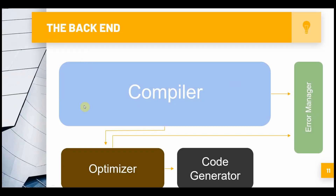Now let's look at the backend. Here's how I structured my backend: we have our compiler, our error management system, our optimizer, and our code generator. If the compiler is successful, we send all of our converted state to the optimizer. The optimizer then converts that state into something else and sends it to the code generator. Again, we're just converting one state to another. If any one of these breaks, we don't go to the next one. If the compiler breaks, we won't go to our optimizer. If our optimizer breaks, we won't go to our code generator.